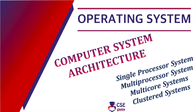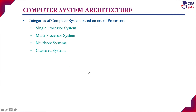Welcome to CSE Guru. In this session we will discuss the next topic under operating system, that is computer system architecture. We are going to discuss the different categories of computer systems based on number of processes. The categories include single processor system, multiprocessor system, multicore systems, and clustered systems. In this session we will discuss single processor and multiprocessor systems. In the next session we will discuss multicore and clustered systems.